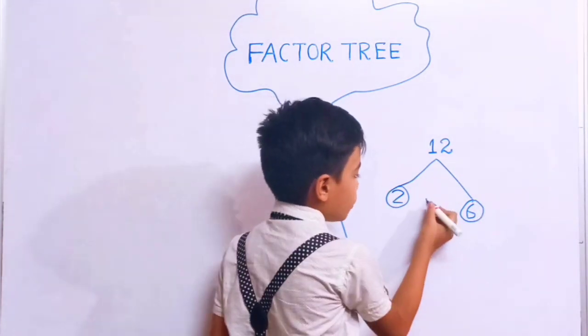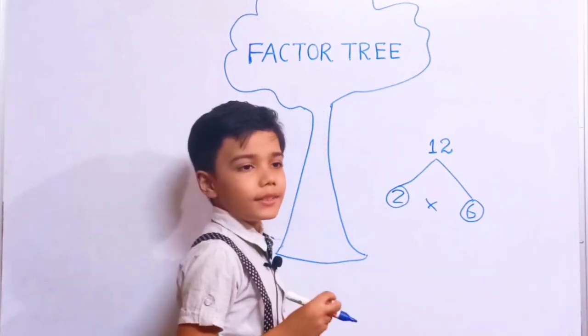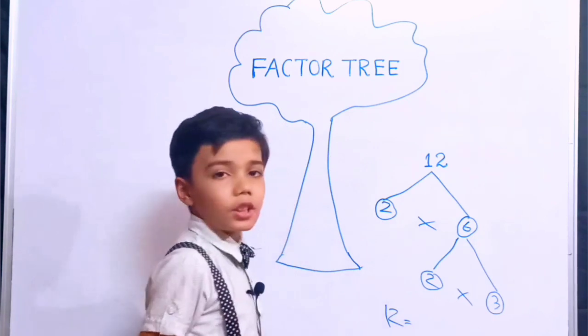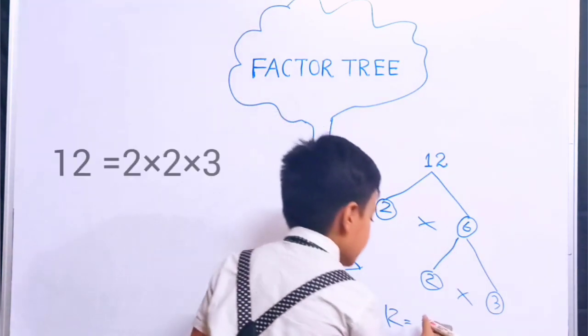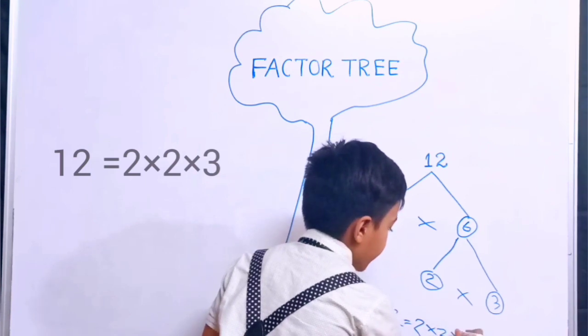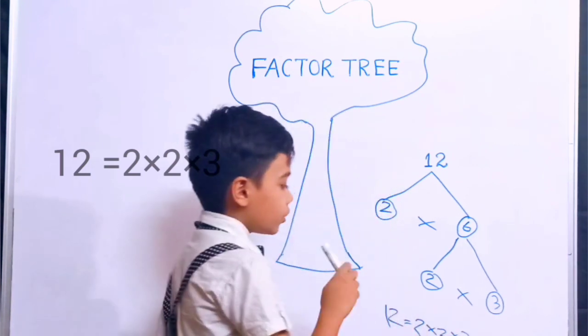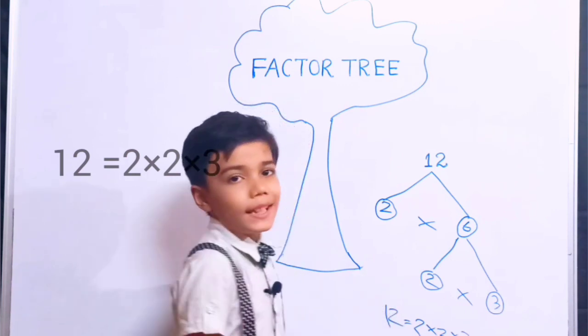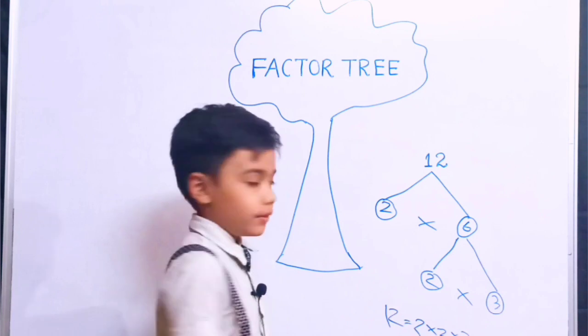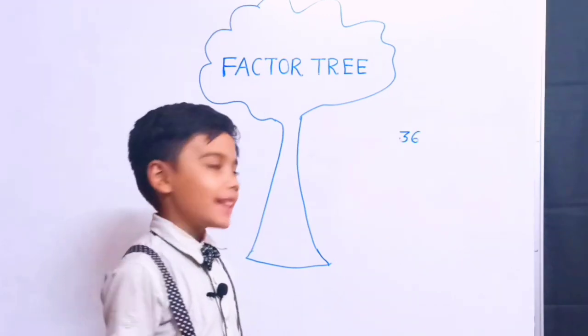2 into 6, so we will get 12. The factors of 12 is 2 by 2 by 3. 2 into 2 is 4. 4 into 3 is 12. If we multiply these numbers, we will get 12 again. Take another example.